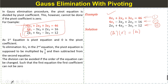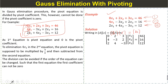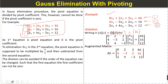We have an example with the first, second, and third equations. We write this in the matrix form Ax = b and then write the augmented matrix. We can see that the first pivot coefficient is 0, so we perform pivoting.